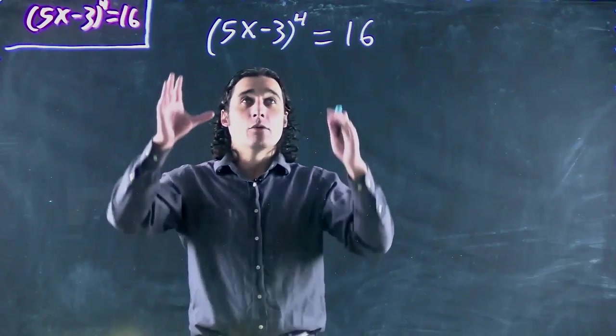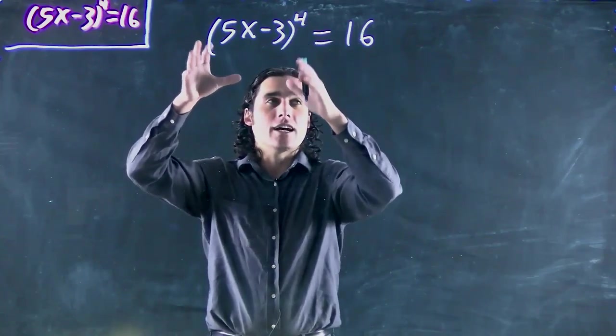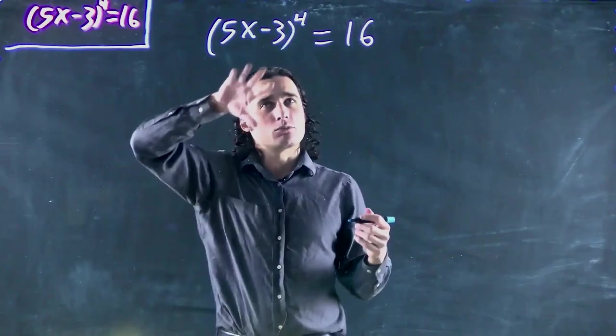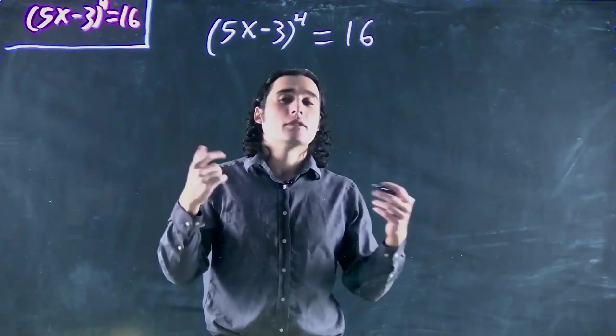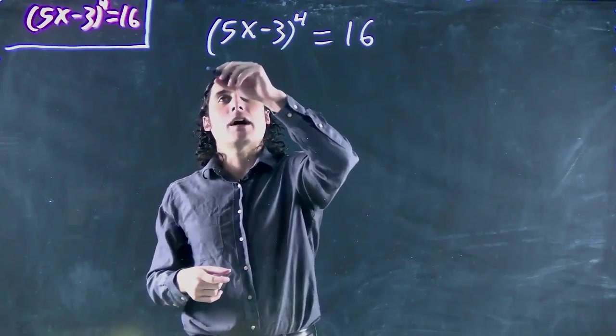Well we still treat it the same way. We've got just a power on one side. If we want to eliminate the power because we're trying to solve for x, got to get rid of the power before we can get into the bracket, put both sides to the power of 1/4.